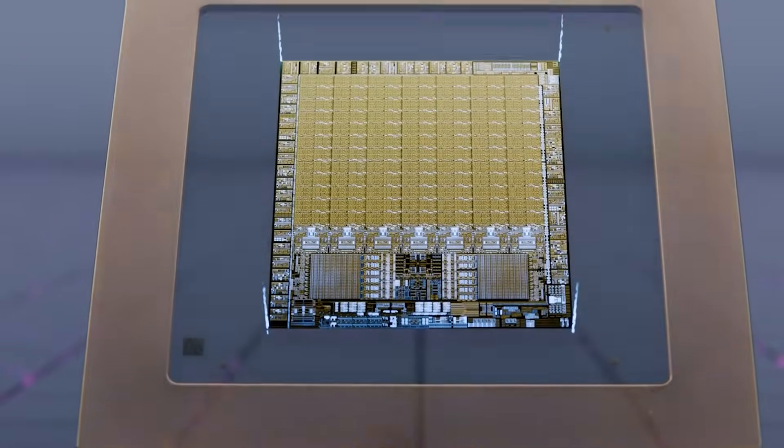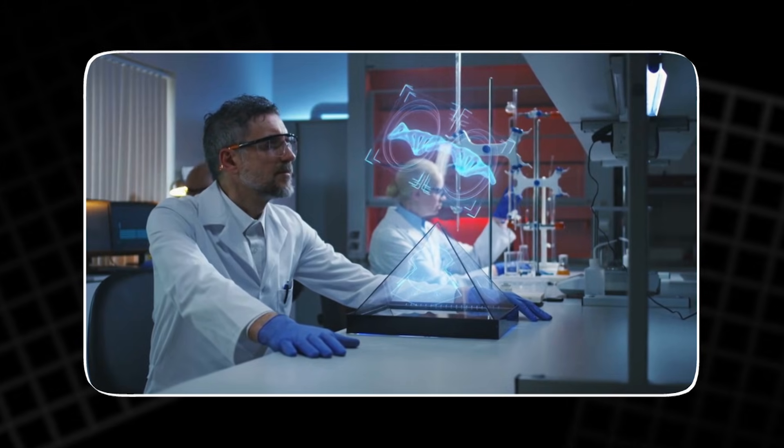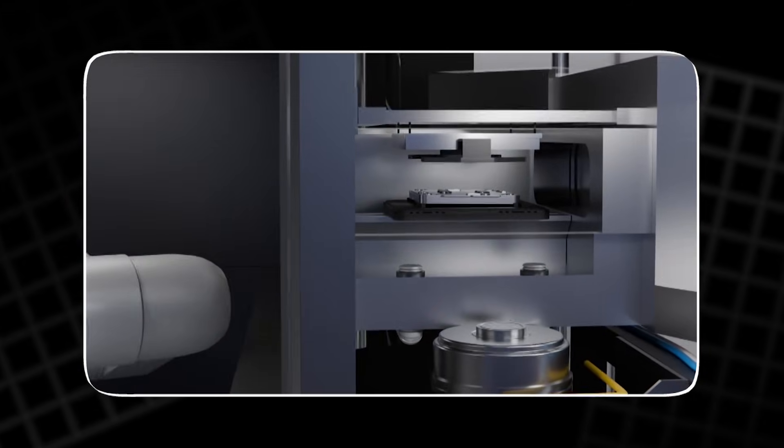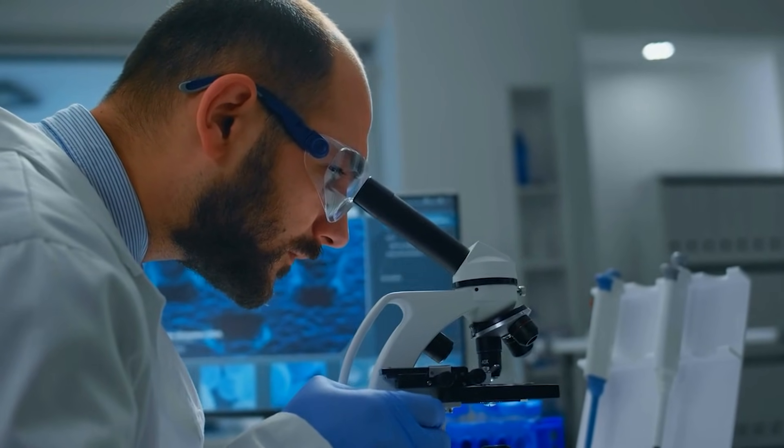But electron beams are brutal. Stay too long on one spot, and the sample burns. To see deeper, we had to cut a slice thinner than DNA. This tiny piece lets us reveal the nanosheet channel where current flows. But even this microscope could not show atoms.